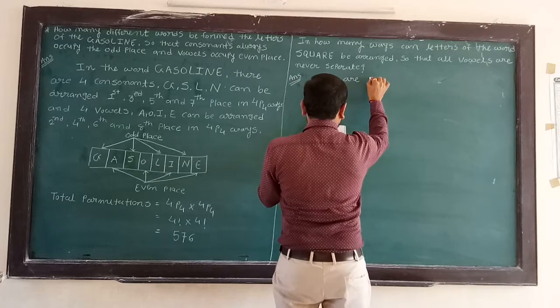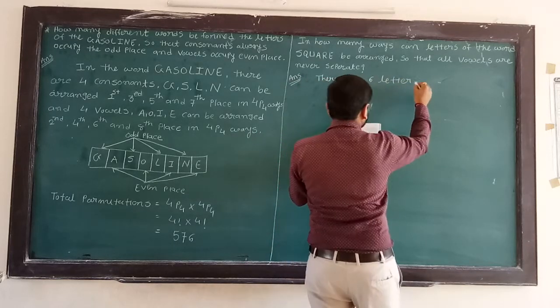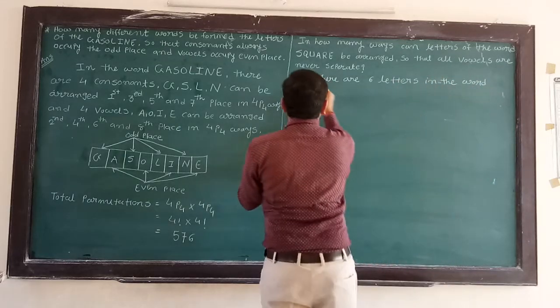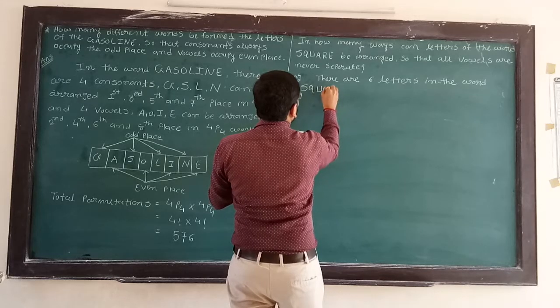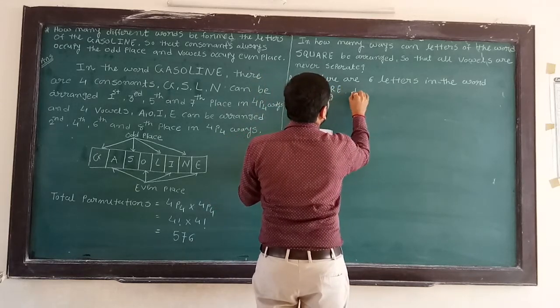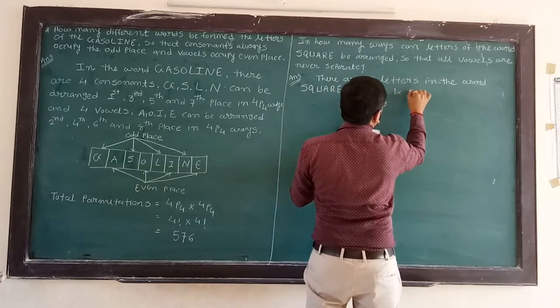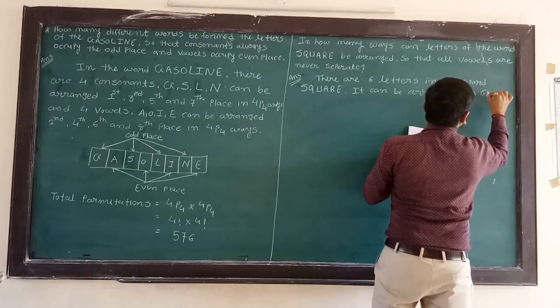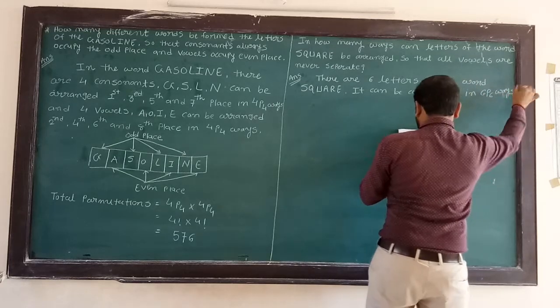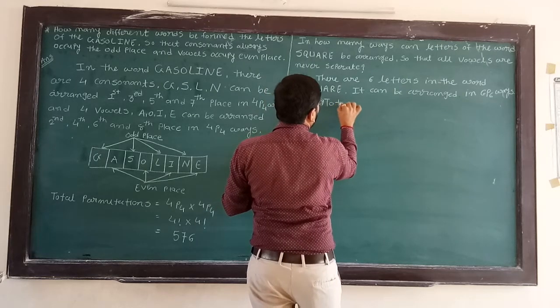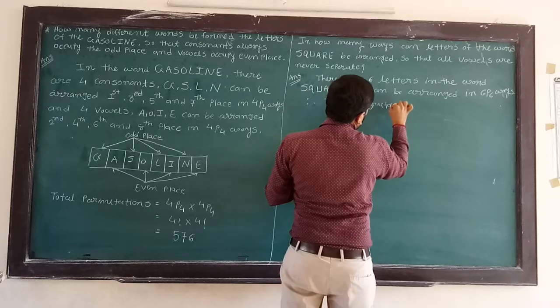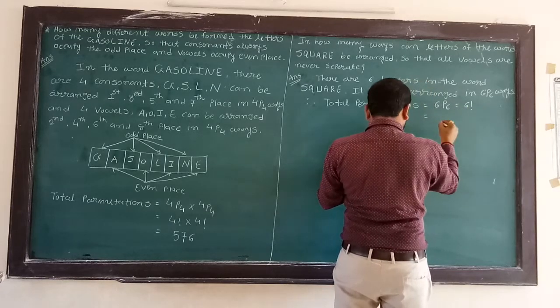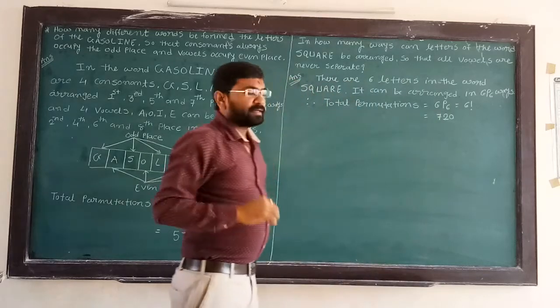There are six letters in the word SQUARE: S, Q, U, A, R, E. These can be arranged in 6P6 ways. So total permutations equal 6P6, which is 6 factorial equals 720 ways to arrange the word SQUARE.